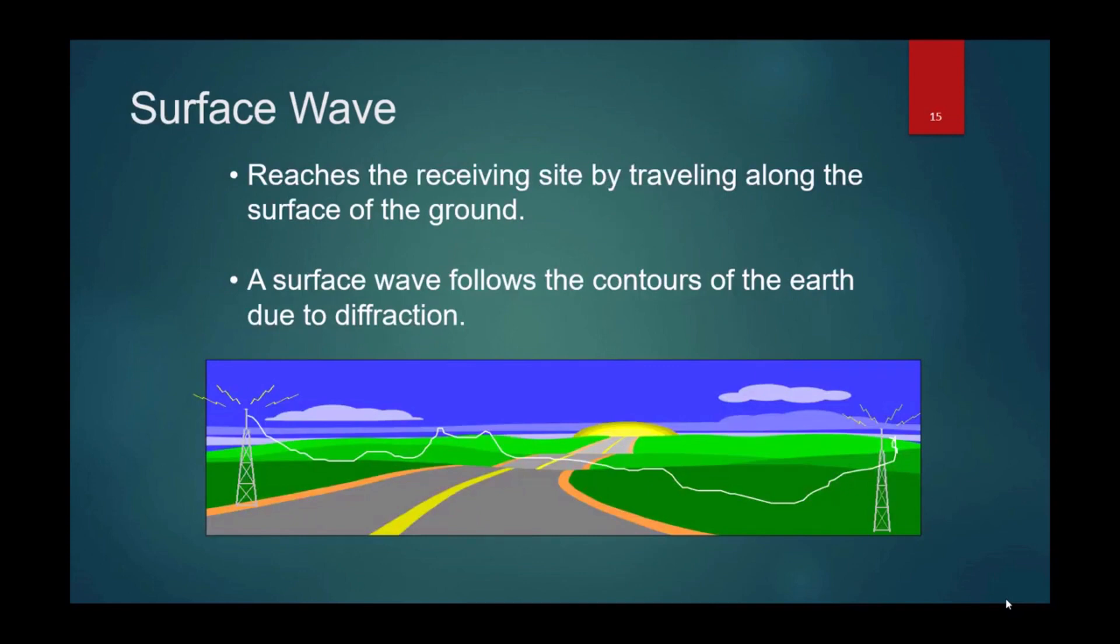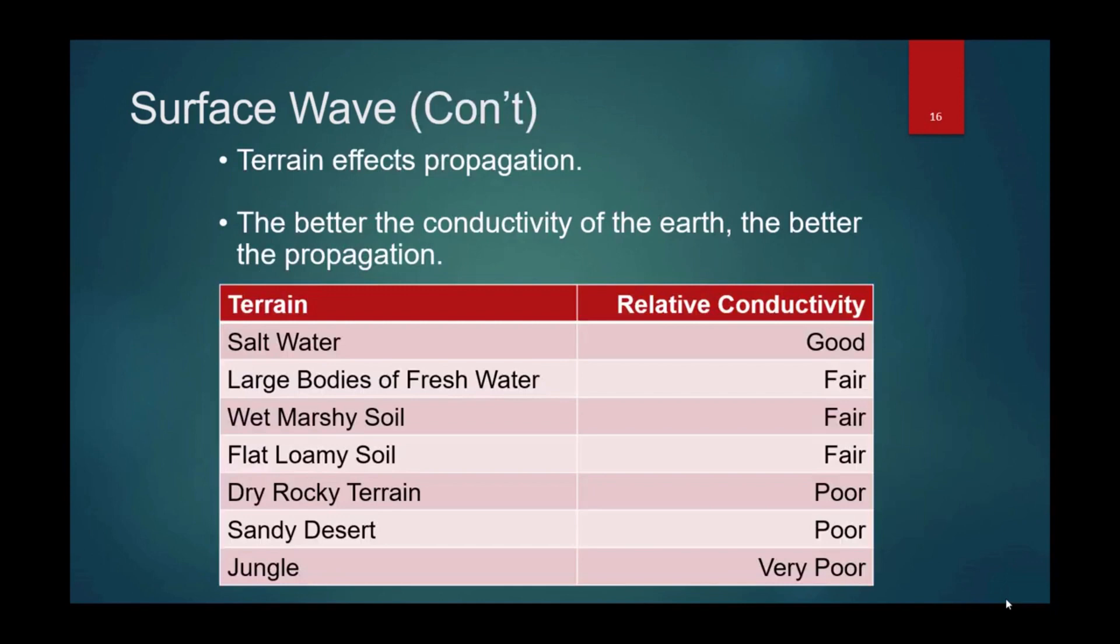Surface wave reaches the receiving site by traveling along the surface of the ground. A surface wave follows the contours of the earth due to diffraction. Terrain affects propagation. Salt water has very good connectivity, all the way down to jungle which is very poor. Jungle has a really moist environment with lots of vegetation, but it's because of that that causes these direct waves to attenuate heavily. You know this if you've ever been in the woods, not just the jungle, and you're trying to transmit on your VHF radio - you're not going that far. Those radio waves are getting heavily attenuated, absorbed by the trees.